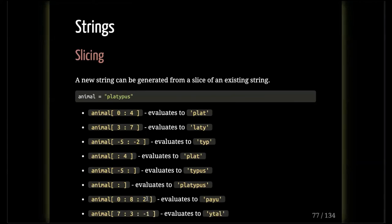If you want to go backwards, you can do animal[7:3:-1] — from index 7 down to but not including index 3 in negative-one steps. So 7 to 6 to 5 to 4, but not to 3. That would give you 'supy' going backwards. You put a negative step here, subtracting by one with each index until you get to one above the stop boundary.